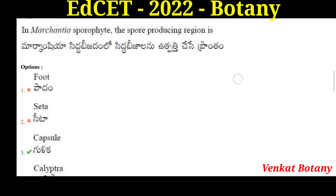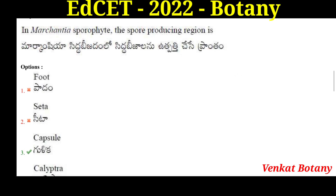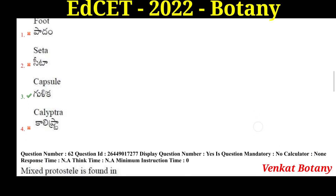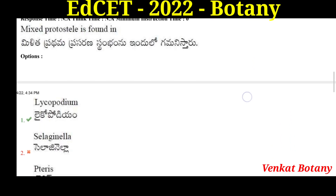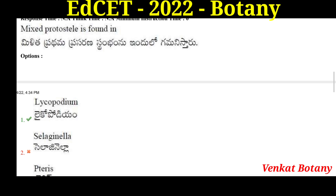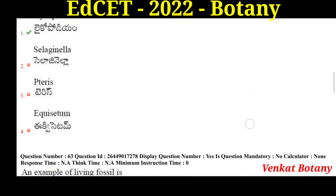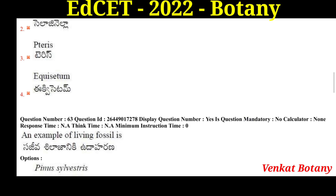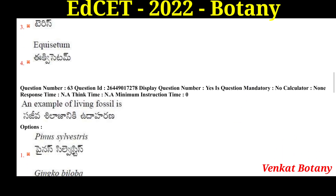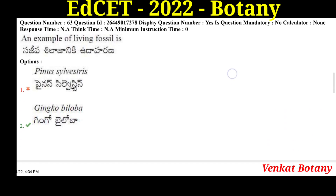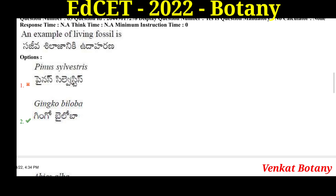In Marchantia sporophyte, the spore-producing region is the capsule. Mixed protostele is found in Lycopodium — xylem surrounded by phloem, with food and water conduction. An example of a living fossil is Ginkgo biloba, which is a gymnosperm plant.